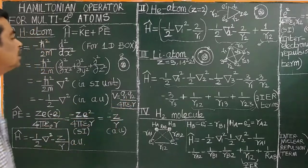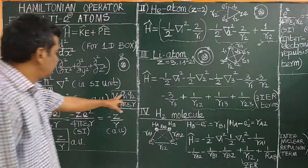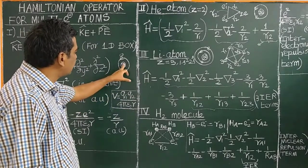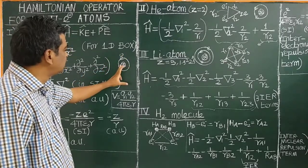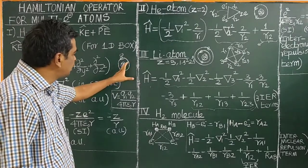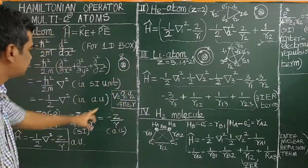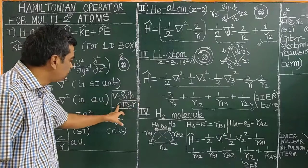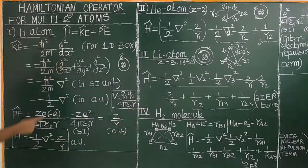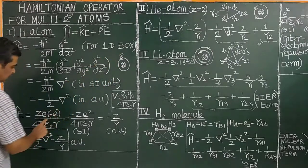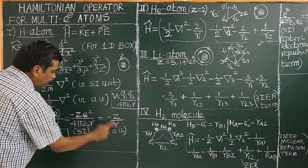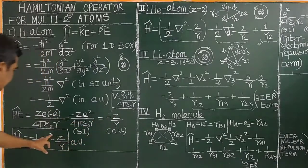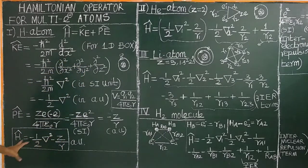The potential energy operator is given by Q1 times Q2. The charge on the nucleus is Ze plus, and the charge on the electron is e minus. The potential energy equals Q1 Q2 divided by 4 pi epsilon-naught R. Substituting the charges, in atomic units this becomes minus Z by R. For hydrogen atom, Z equals 1, so it is minus 1 by R.